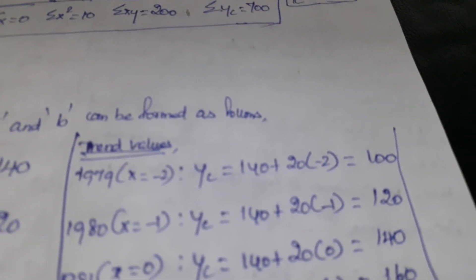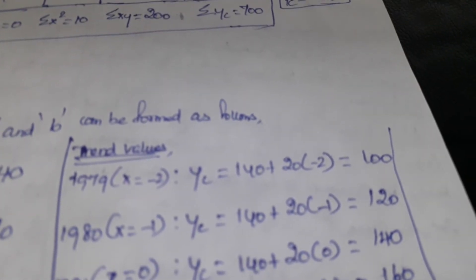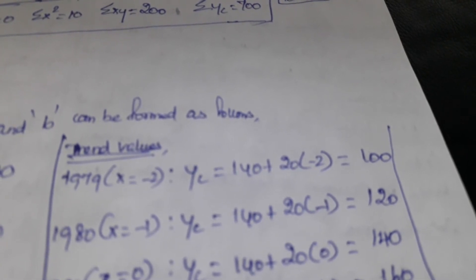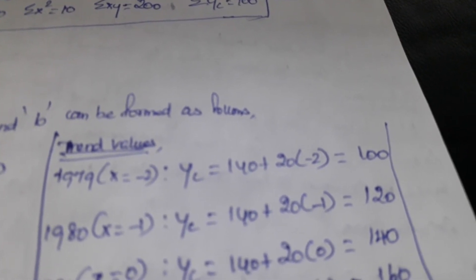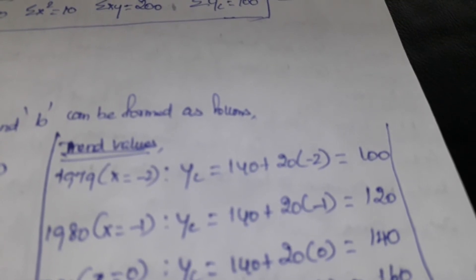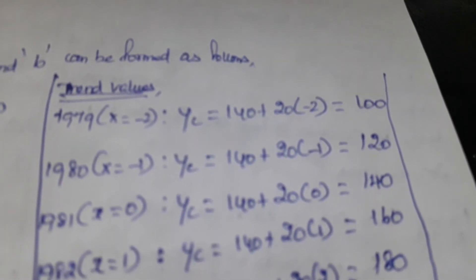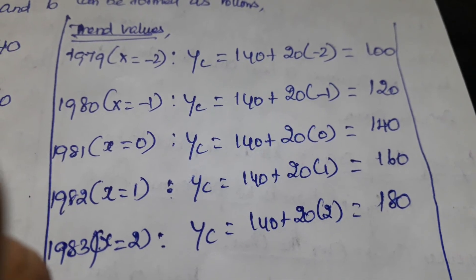To find the trend values, for the first year 1979, the X variable value is -2. We put the value of X in the equation and we get the answers as 100, 120, 140, 160, and 180.